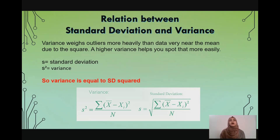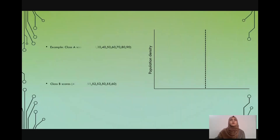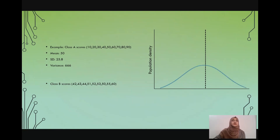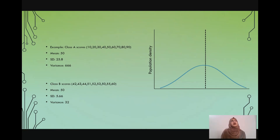Taking the similar example of classes A and B and the standard deviations we saw, if we were to calculate variance — which is the square of standard deviation — class A variance would be 666 and class B variance would be 32. What we're trying to say is that in data sets that have very closely related standard deviation values, how we can distinguish between the two would be by calculating the variance. Because squaring the standard deviation gives us a bigger number, and when we plot it on the graph, it would more easily spot the outlier.